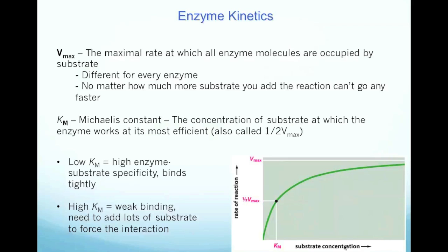A high Km, however, means that the enzyme has kind of a weak affinity for its substrate, because it takes a lot of substrate to get it at a certain half Vmax.